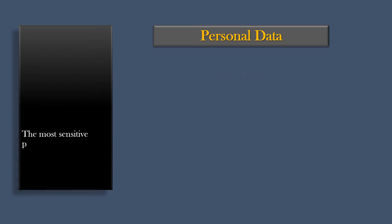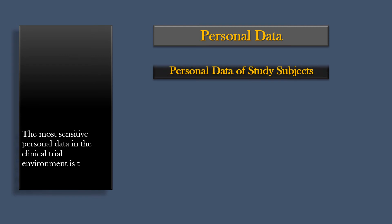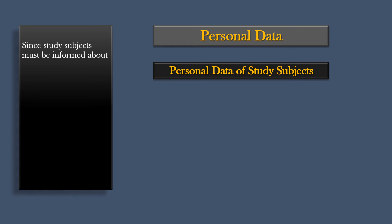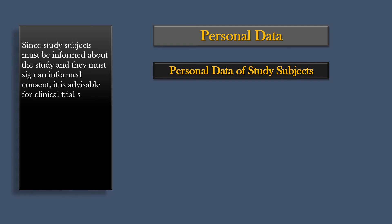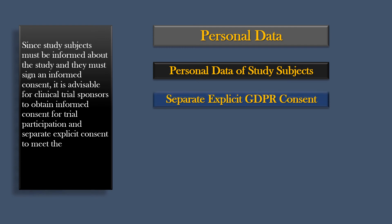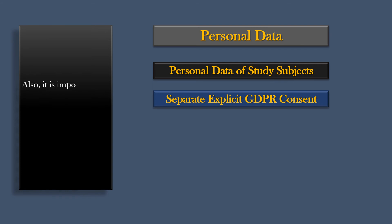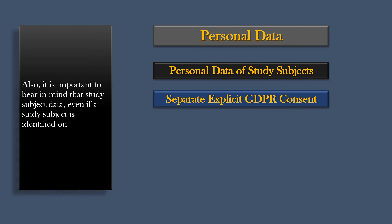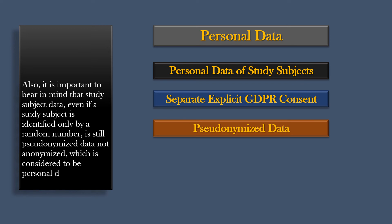The most sensitive personal data in the clinical trial environment is the personal data of study subjects. Since study subjects must be informed about the study and they must sign an informed consent, it is advisable for clinical trial sponsors to obtain informed consent for trial participation and separate explicit consent to meet the requirements of the GDPR for the processing of special category data. It is important to bear in mind that study subject data, even if a study subject is identified only by a random number, is still pseudonymized data, not anonymized, which is considered to be personal data with regards to GDPR.